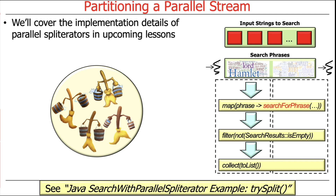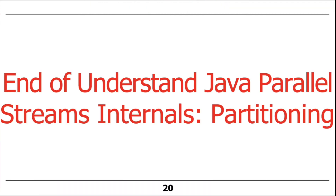We'll cover more implementation details of parallel spliterators in upcoming lessons, and we'll also look at the performance implications of different spliterators and data structures — actually measuring which performs better as the list size grows. To summarize: spliterators are key to partitioning in parallel streams. Unlike sequential streams where only tryAdvance matters, for parallel streams trySplit matters too. Most of the time this is handled for you, but if you create custom collections, you'll need to think about how to implement the spliterator.